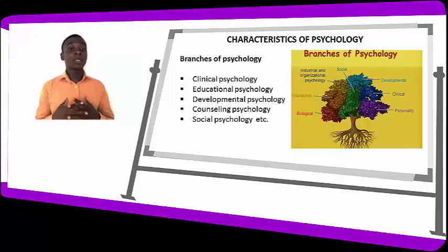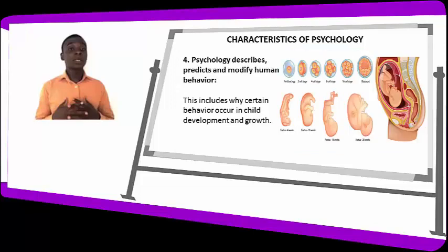We are still under the characteristics of psychology. The fourth characteristic is that psychology describes, predicts, and modifies human behavior. It describes human behavior, it predicts human behavior, and it modifies human behavior.